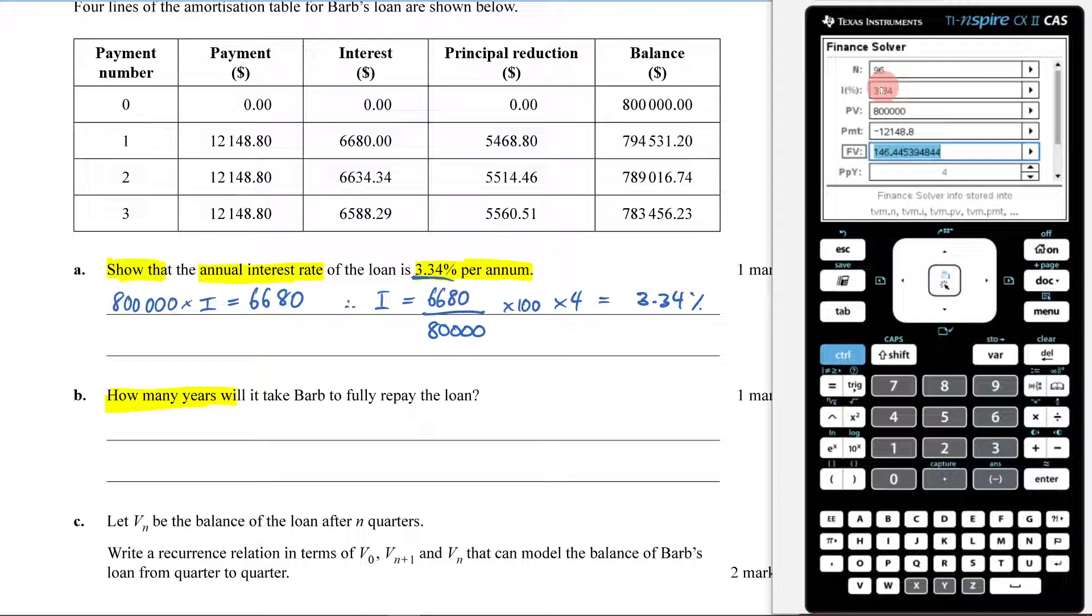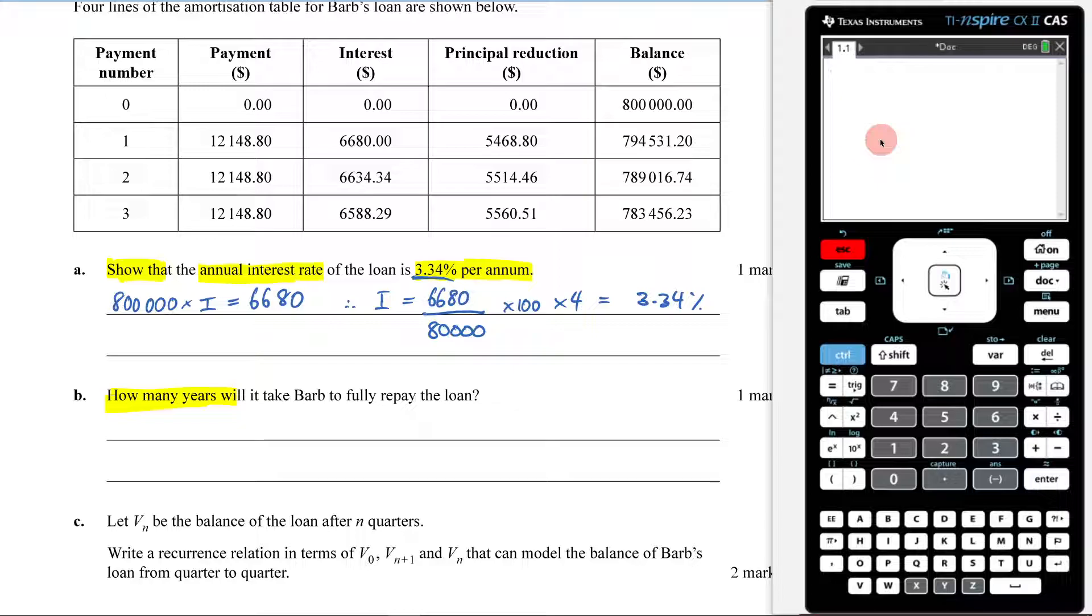But it's only fully paid off after 96. So that last repayment, that 96, you're going to pay a bit less, but it is 96. Now, that's 96 quarters. So that means what you're going to have to do is go 96 divided by 4 to get the amount of years. So it's going to be 24 years here.